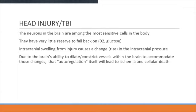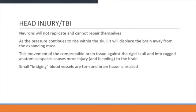Intracranial swelling from the injury causes a rise in intracranial pressure. Due to the brain's ability to dilate and constrict vessels — the auto-regulation — it will lead to ischemia and cellular death. Neurons will not replace or repair themselves. As the pressure continues to rise within the skull, it will displace the brain away from the expanding mass. The movement of compressible brain tissue against the rigid skull into rugged anatomical spaces causes more injury and bleeding, and small bridging blood vessels are torn.